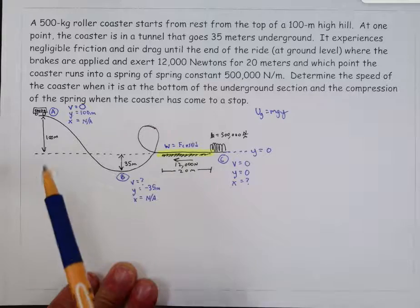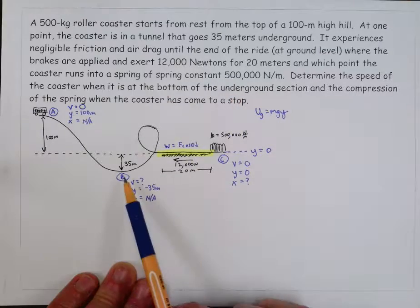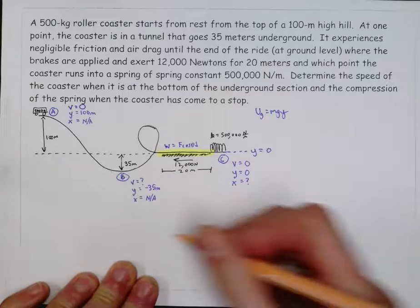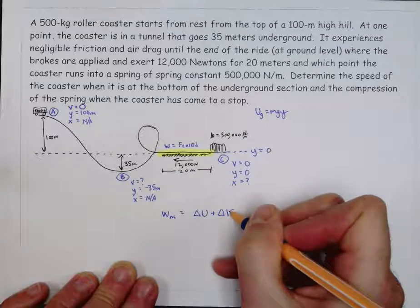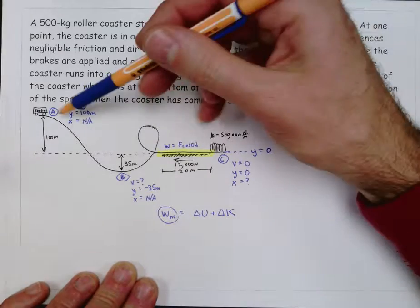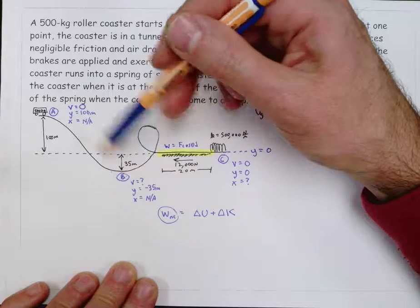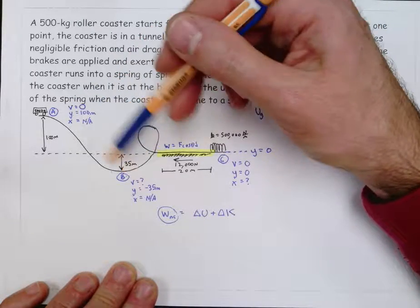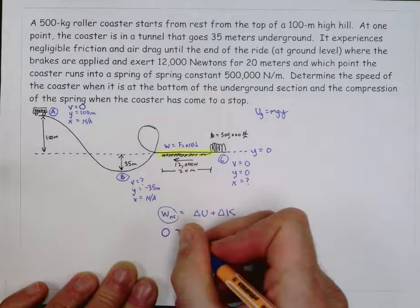All right, so let's start here. It says determine the speed of the coaster when it's at the bottom of the underground section. So we're really going to compare a to b. And so when I set up my equation, w and c equals delta u plus delta k. And I think about the w and c part of this equation. I'm just looking at moving from a to b. So the friction is over here. That's not between a and b. And since the friction is not between a and b, since the only forces that are doing work between a and b, really, it's just gravity, that's a conservative force, I'm going to put a zero on the left-hand side of that equation.